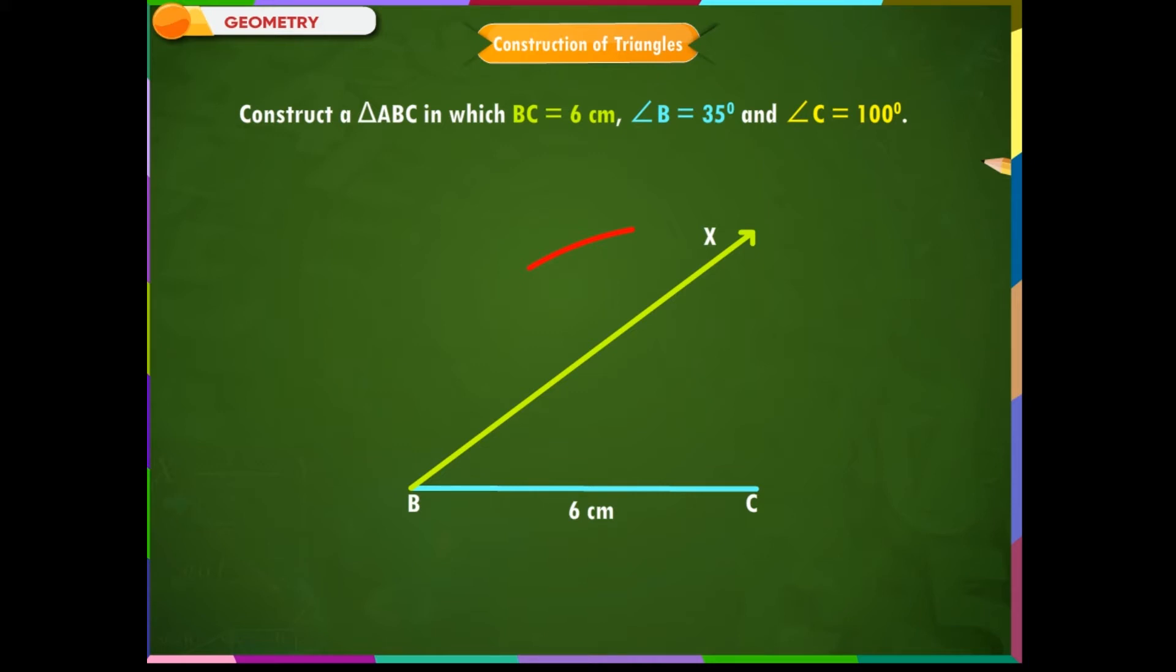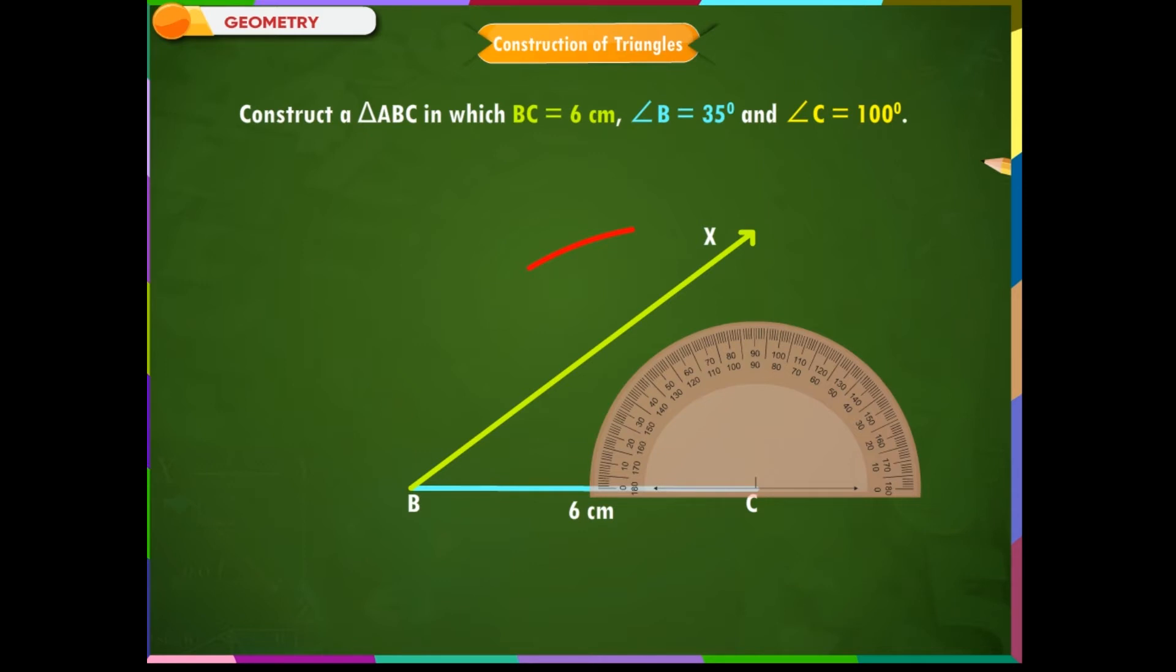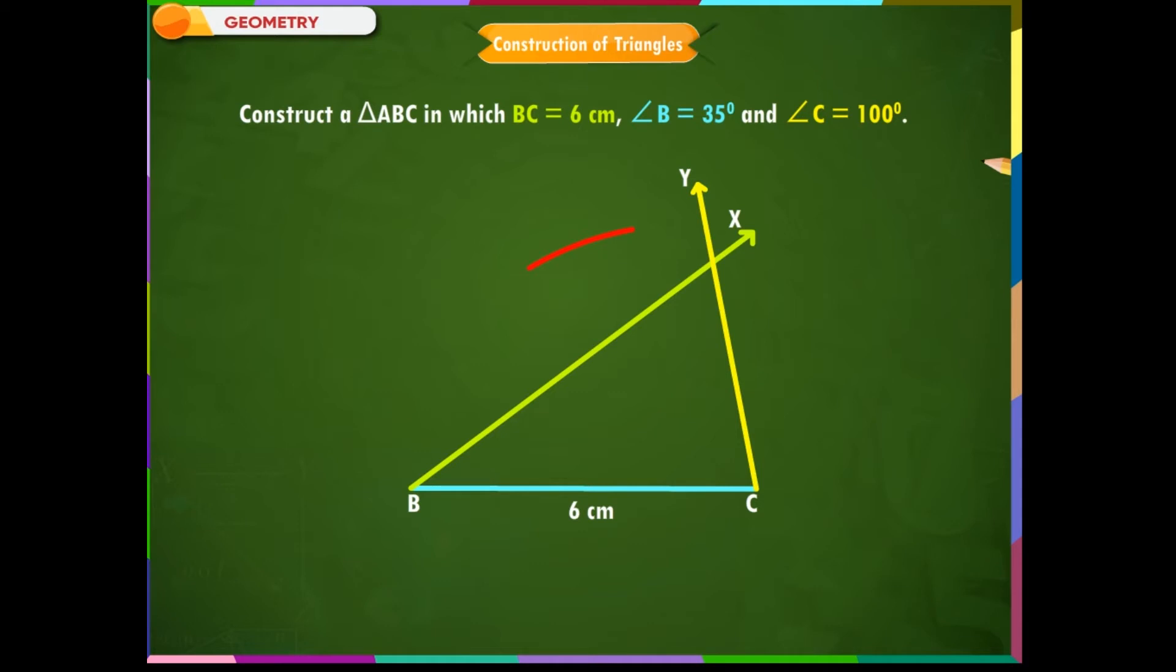Step 3: Angle C is given as 100 degrees. Place the protractor on point C and mark 100 degrees. Draw a ray CY as shown on the screen. Angle BCY is equal to 100 degrees. Step 4: Let BX and CY intersect at A. Triangle ABC is the required triangle.